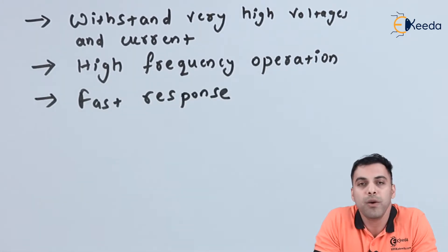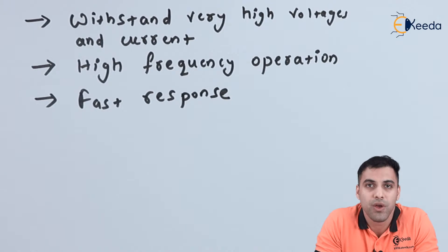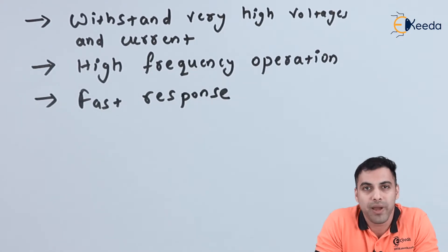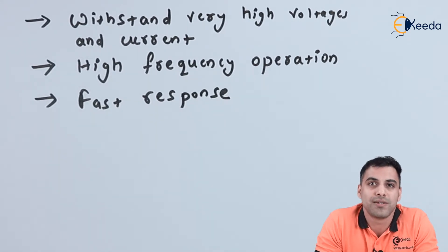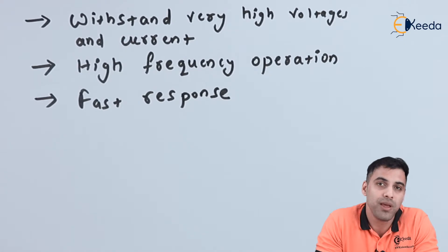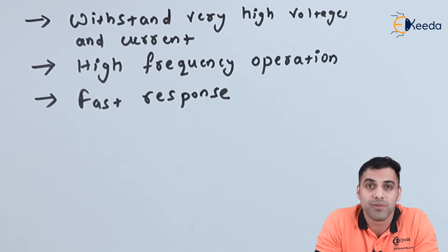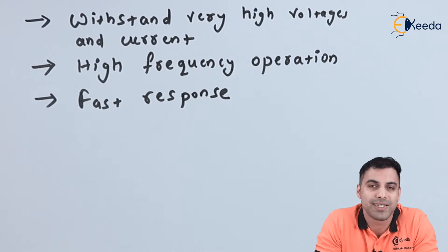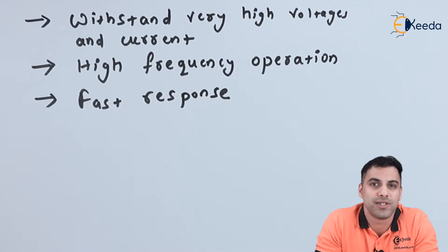How is a Power IGBT constructed? A semiconductor device becomes a power semiconductor device when we dope an extra region to it — that means it is extremely heavily doped. When a power semiconductor device is heavily doped, we are increasing the n-minus electrons, which is the reason the width of the space charge region increases. The amount of carrier charges present before heavy doping increases after doping, and that is why a semiconductor device becomes a power semiconductor device — capable of withstanding extremely high voltages and currents.